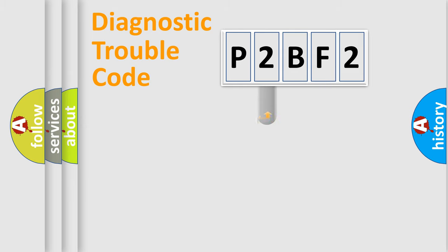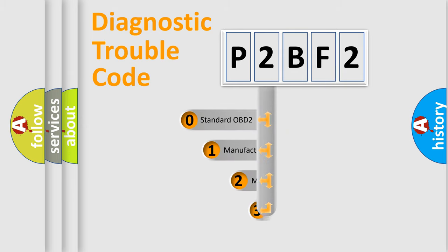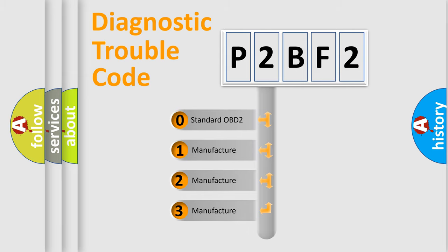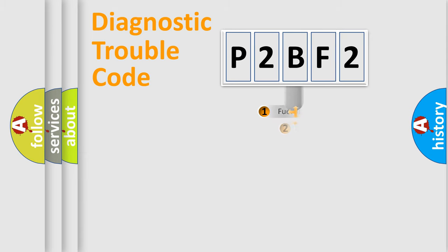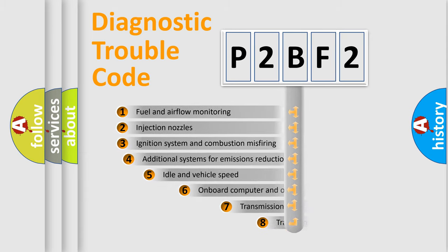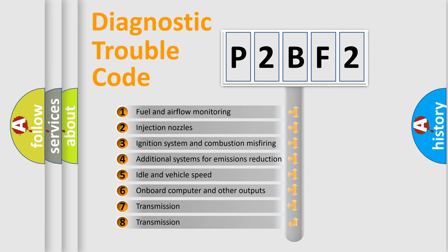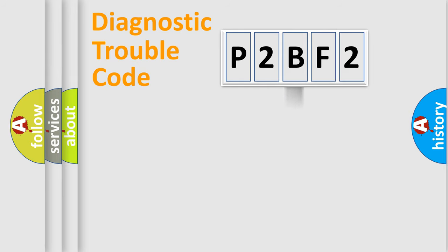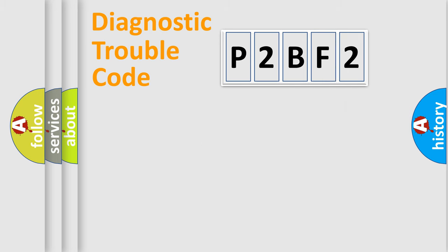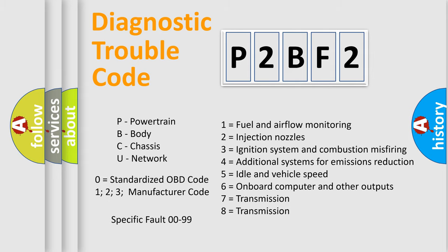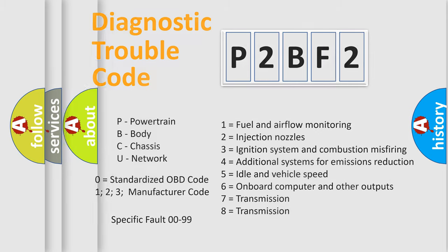This distribution is defined in the first character of the code. If the second character is expressed as zero, it is a standardized error. In the case of numbers 1, 2, or 3, it is a more specific car-specific error. The third character specifies a subset of errors. The last two characters define the specific fault of the group. This division is valid only if the second character is expressed by the number zero.